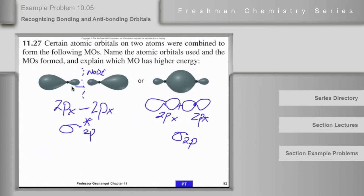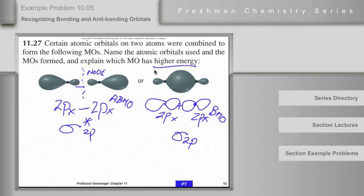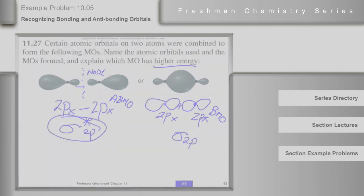So, is this molecular orbital higher in energy or lower in energy than this one? This one over here is going to be higher in the diagram. They're both derived from 2p orbitals, but the bonding molecular orbital will be lower than the antibonding molecular orbital. So the one that has higher energy is this one. What do you think — have we got it?